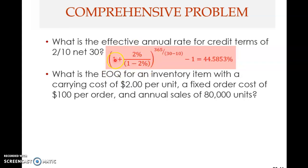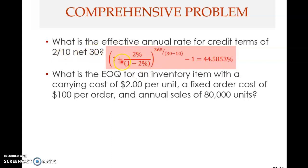Now we look at this comprehensive problem. What is the effective annual rate for credit terms 2/10 net 30? We have seen the formula. This is 1 plus 2 over 1 minus 2%, raised to the power of M, where M is 365 divided by (30 minus 10). Previously we had used 45 days; here we use 30. Solving this gives 44.58%. This is quite large because the credit term is very short — this 2% discount, if you forego it, will be very expensive.